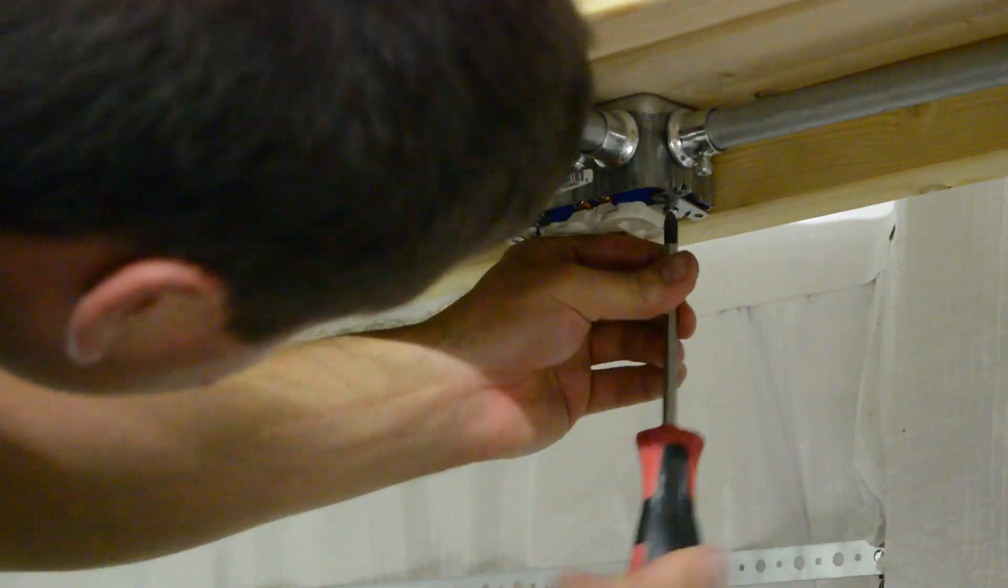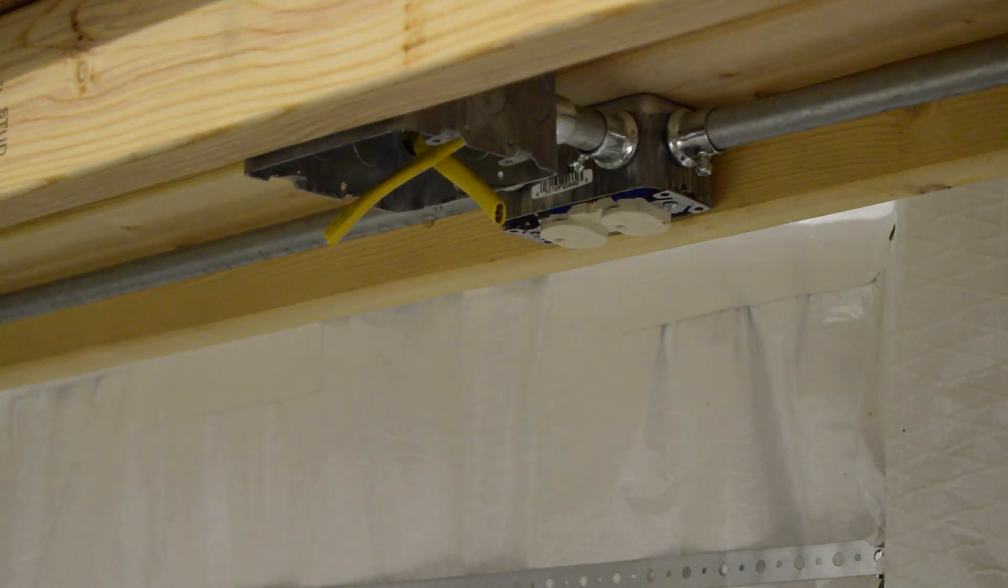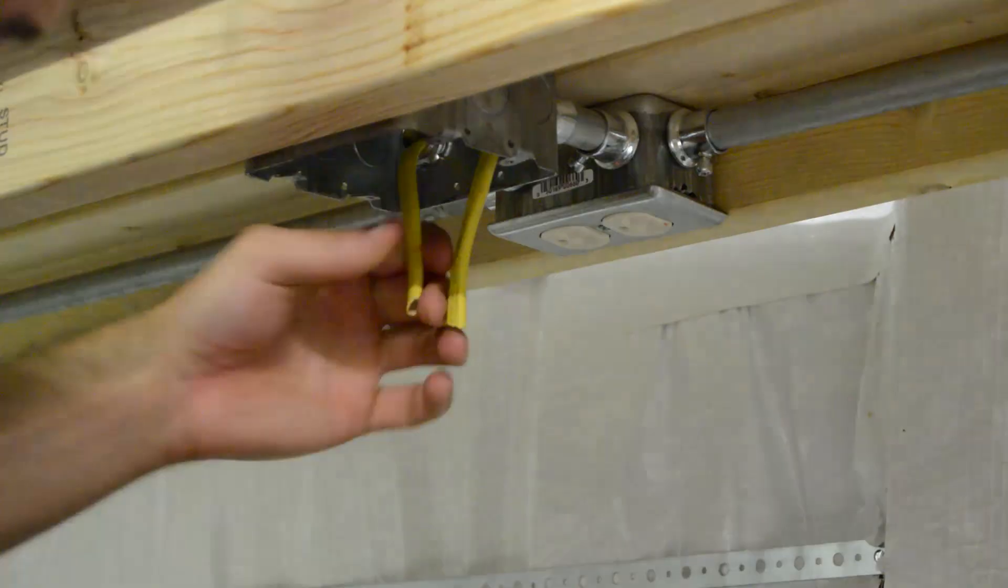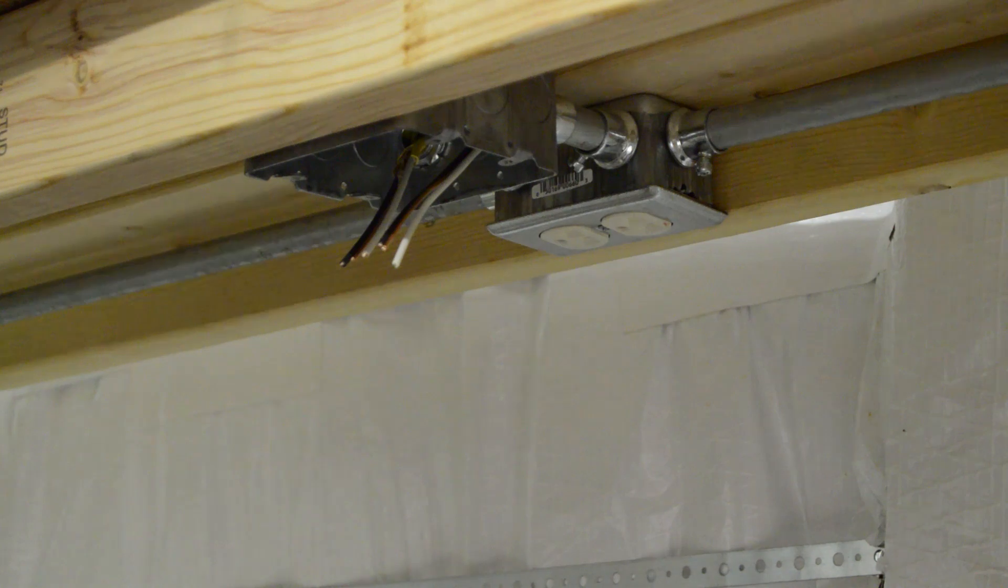All the conduits grounded to each other. All the outlets are grounded to the conduits, the conduits grounded to the main circuit breaker box in the shop. And that's grounded to the metal frame of the shop, so the whole thing comes grounded.